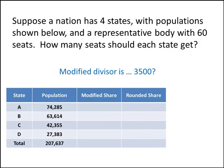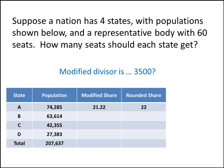We still need a divisor that's more than 3460, but not quite as large as 4000. So let's try 3500. We'll find our modified shares by taking the population of each state, starting with A, and dividing by our new divisor. That gives A a modified share of 21.22, which rounds up to 22 seats for A. We do that for B, C, and D as well, dividing each state's population by the modified divisor — but now we're back to 62 seats, so we clearly didn't make the divisor large enough.